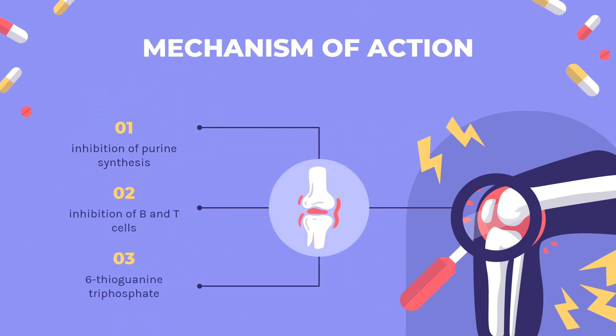Mechanism of action: Azathioprine's mechanism of action is not entirely understood, but it may be related to inhibition of purine synthesis, along with inhibition of B and T cells.